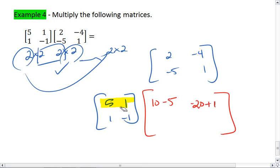We'll then take the second row, first column, 1 times 2 is 2, negative 1 times negative 5 is a positive 5.